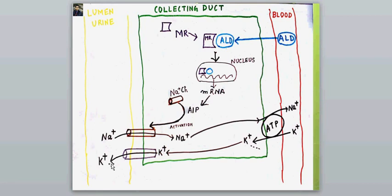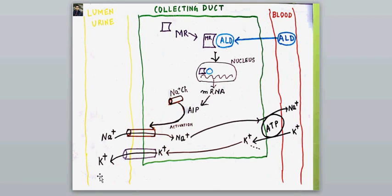At the collecting duct level, sodium is normally exchanged with potassium. When there is an increased or extra load of sodium at this level, to maintain electrochemical balance there is an increased amount of potassium excretion. Because sodium was not absorbed in the thick ascending limb, the increased sodium load at the collecting duct leads to increased potassium excretion, causing hypokalemia — this is a very important side effect of furosemide.